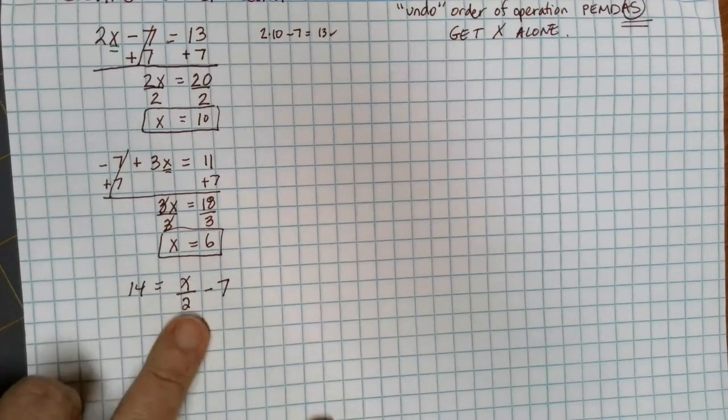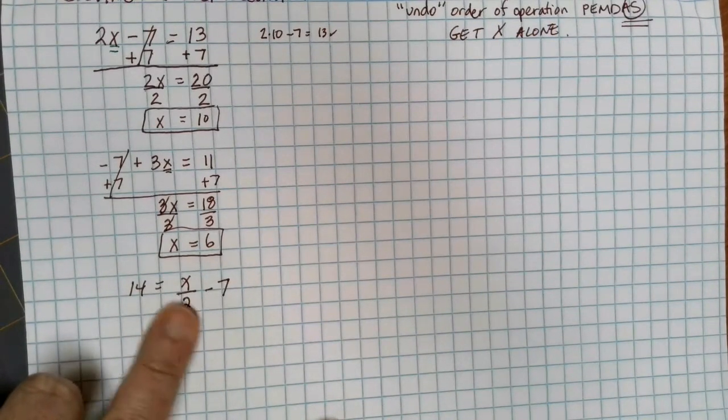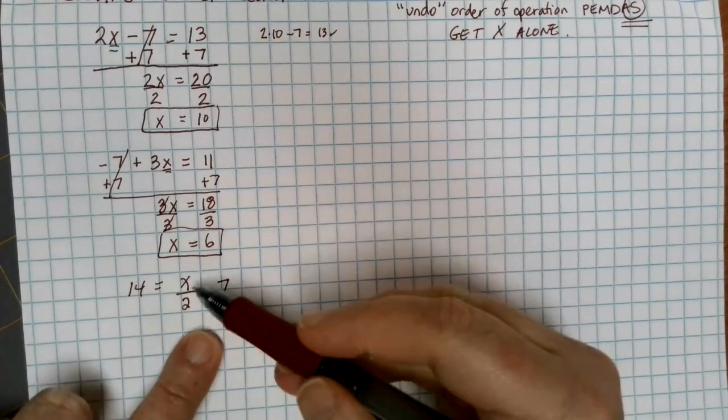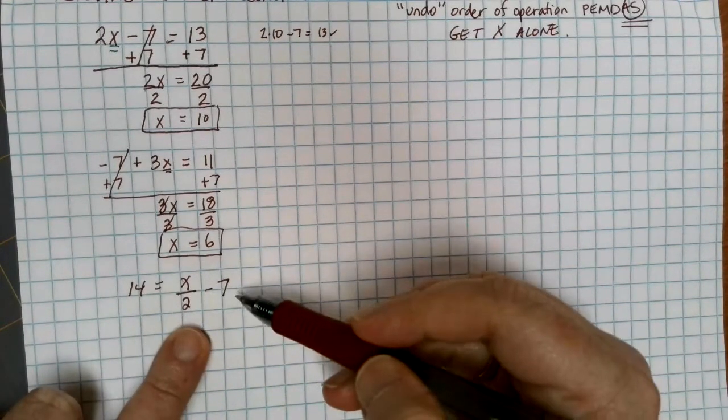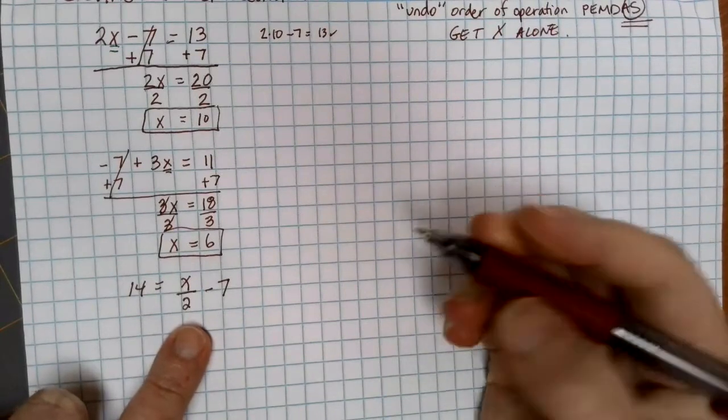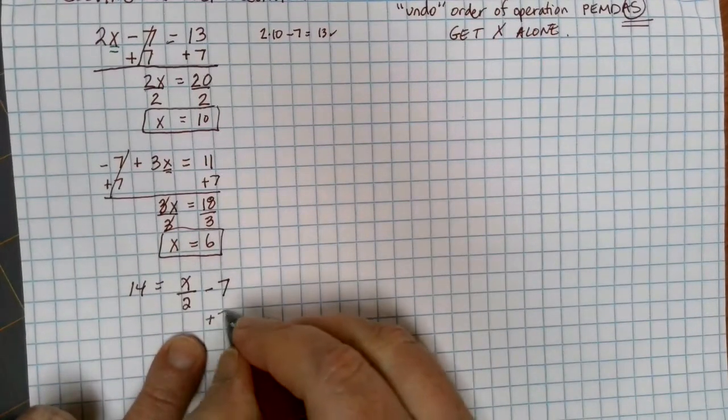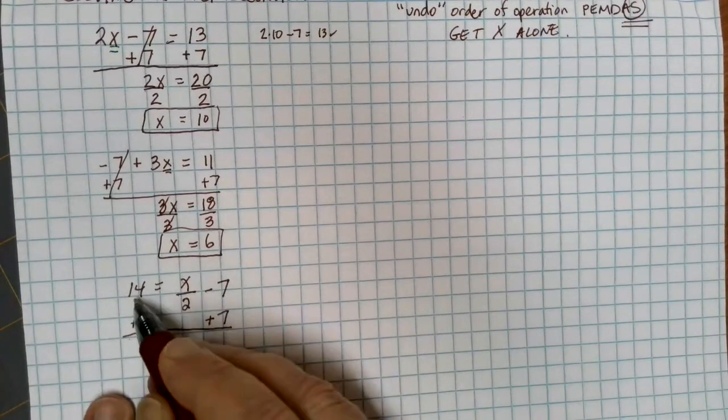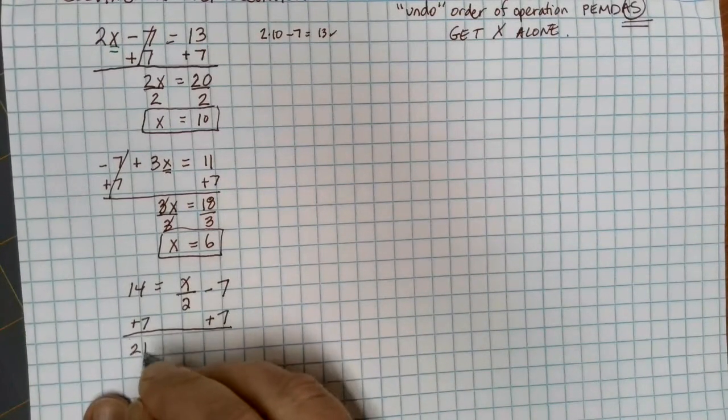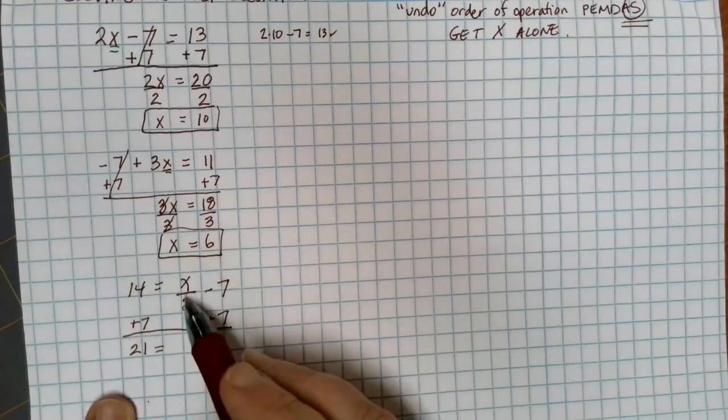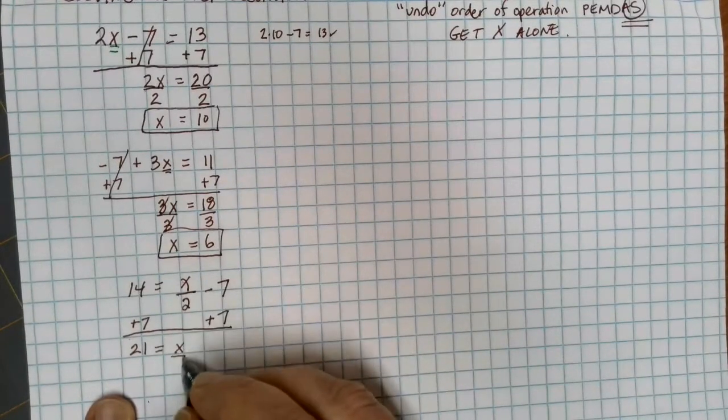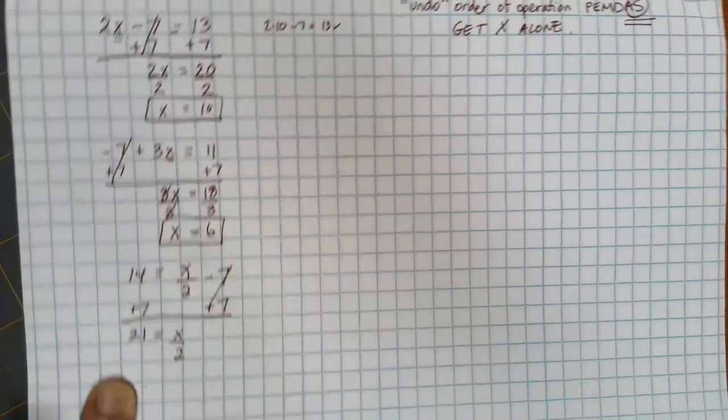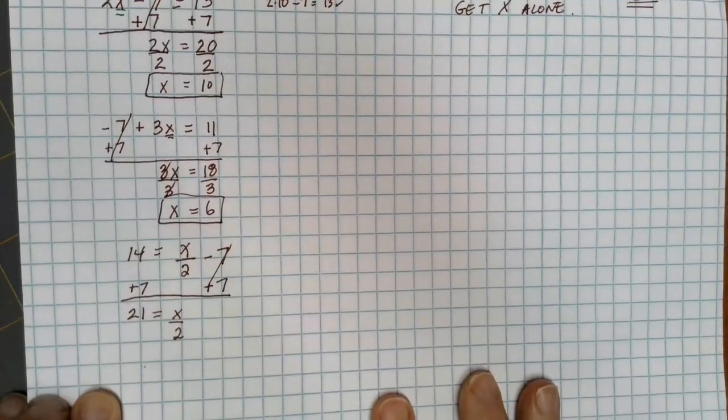Still want to get the x alone. This time it's on the right side of the equation, so I need to get rid of all the values that are on the right side of the equation. Right now, x is being divided by 2 and then subtracting 7. So to get rid of a minus 7, I'm going to need to plus 7 on each side. 14 plus 7 gives me a 21 on the left side. On the right side, I had x divided by 2. Nothing has changed with that. The minus 7 plus 7 undoes each other, and I'm left with this simplified version of the equation.